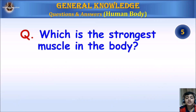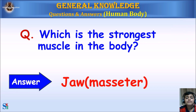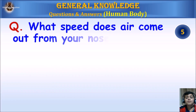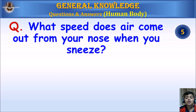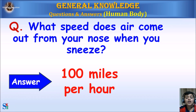Which is the strongest muscle in the body? Answer: Jaw. What speed does air come out from your nose when you sneeze? Answer: 100 miles per hour.